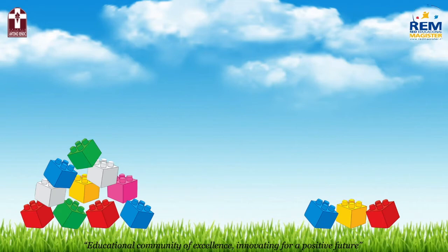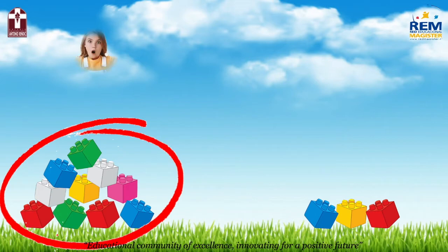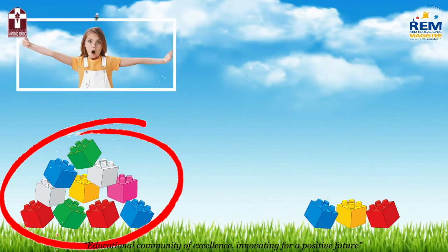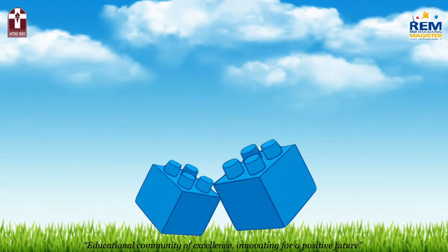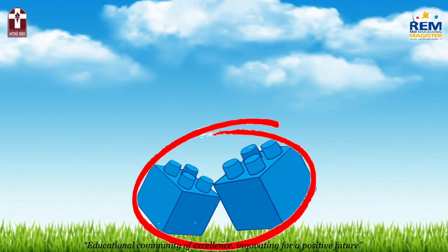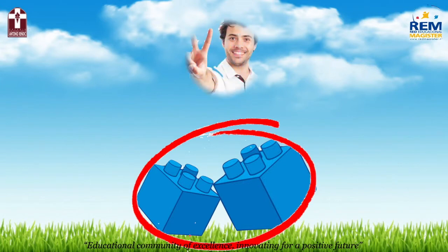Let's make a little exercise now. Look at these two groups of blocks. How many blocks can you see here? Very good! A lot! This group has a lot of blocks. How many blocks can you see here? Great! A few! This group has a few blocks. How many blocks can you see here now? Excellent! A pair. Here, we have a pair of blocks.